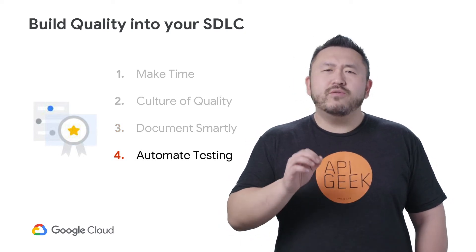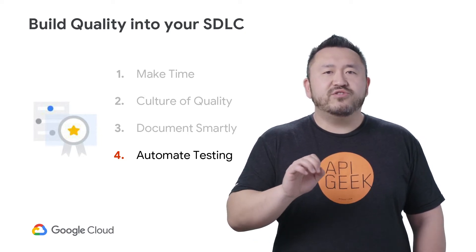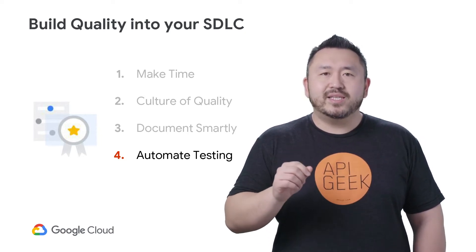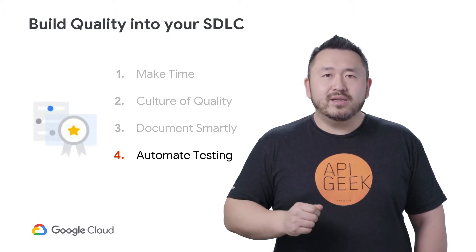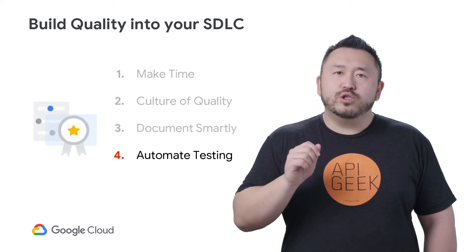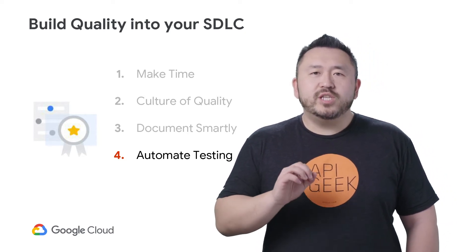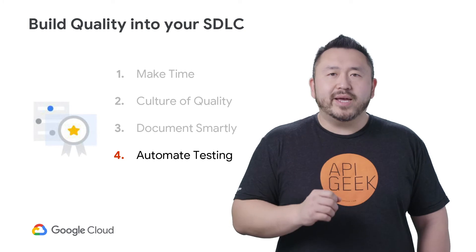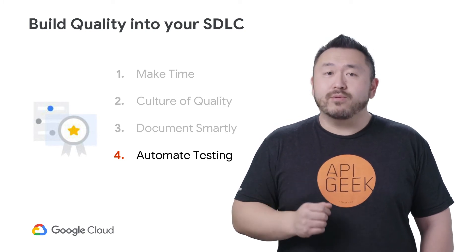Fourth, automate testing, but don't avoid manual testing. Your CI/CD pipeline can assist in quality assurance processes through standardized testing, deployment, and integration. But don't solely rely on automated testing. Your team should always get involved and conduct manual tests to validate that the automated testing is working properly.